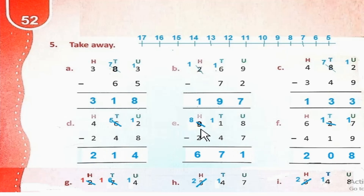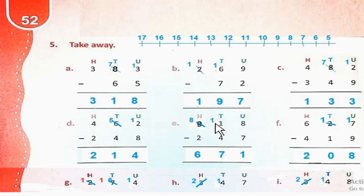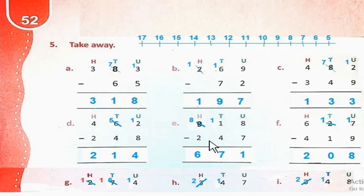Part E: 918 minus 247. 8 minus 7 = 1. 1 से 4 को minus नहीं किया जा सकता। So हम 1 borrow करेंगे — 9 से 8 रह जाएगा, और 1 tens की place पर आ जाएगा, so 11 हो जाएगे। 11 minus 4 = 7. 8 minus 2 = 6. So the answer is 671.